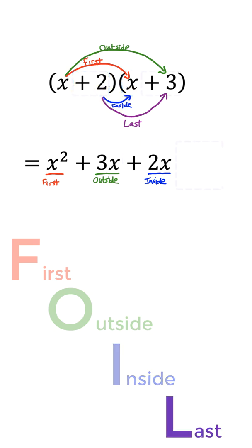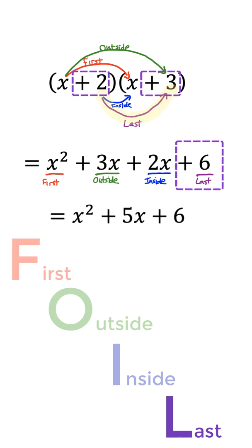And finally, the last terms of each binomial, which is what L stands for, last, get multiplied together. So the 2 and the 3 are the last terms of each binomial, their product is 6.